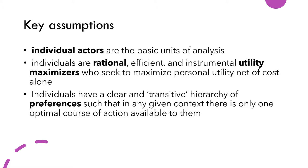These are the key assumptions of rational choice theory. First, for rational choice theorists, individual actors are the basic units of analysis. Second, these individuals are rational, efficient, and instrumental utility maximizers who seek to maximize personal utility net of cost. Lastly, individuals have a clear and transitive hierarchy of preferences such that, in any given context, there is only one optimal course of action available to them.